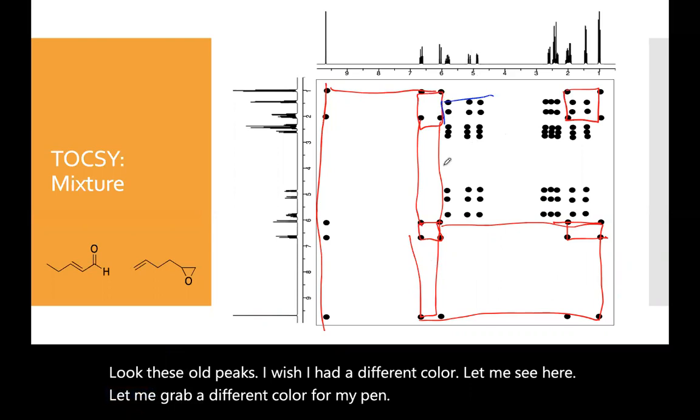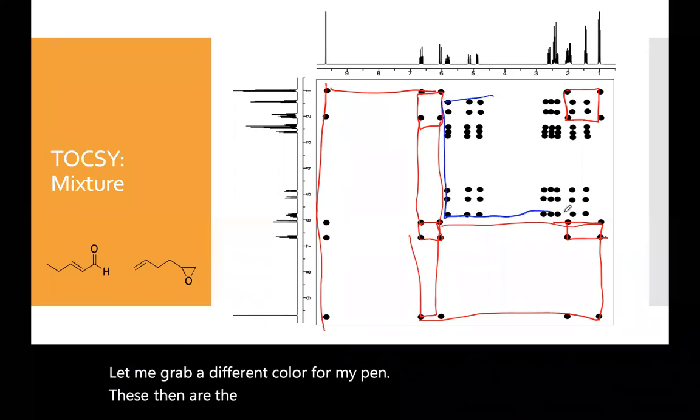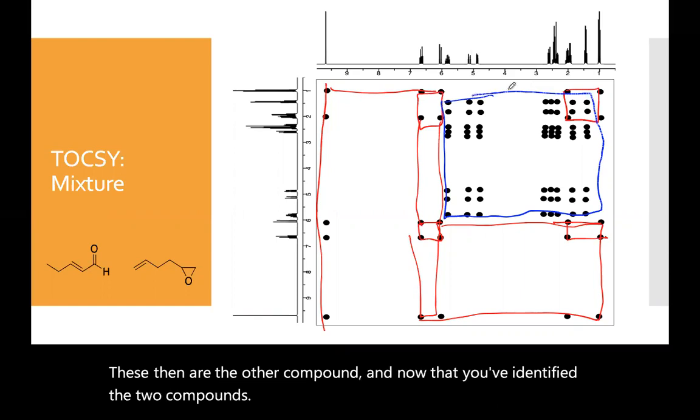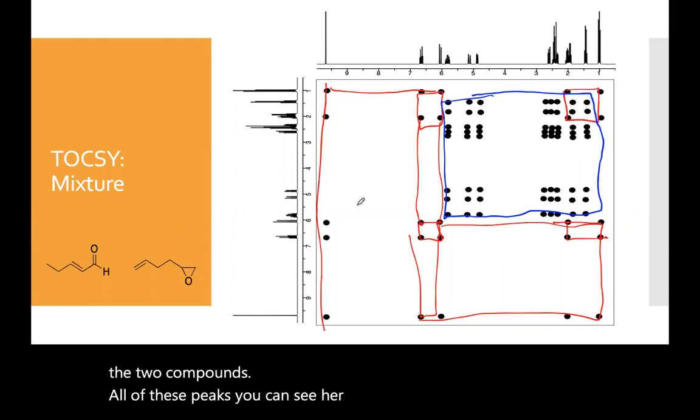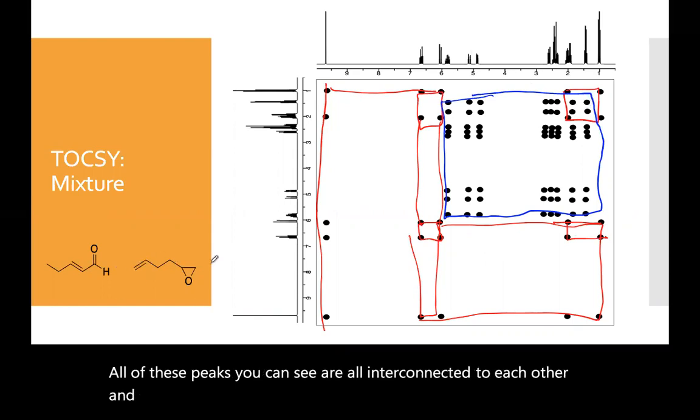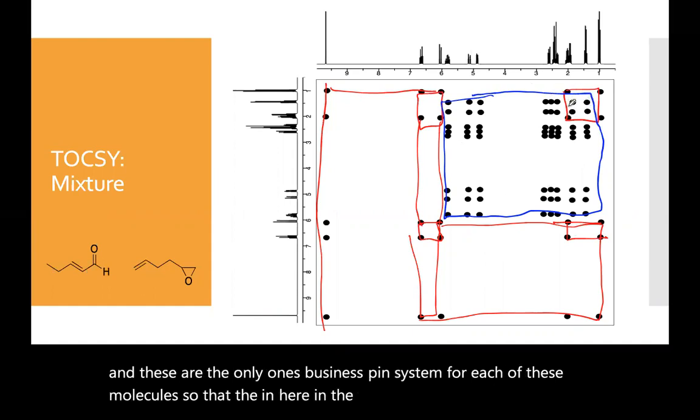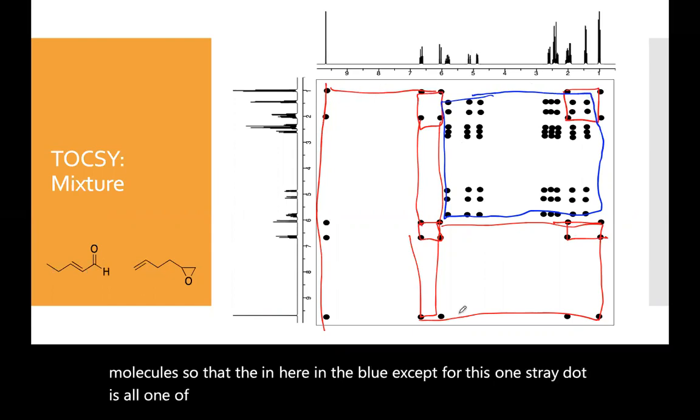These then are the other compound. And now that you've identified the two compounds, all of these peaks you can see are all interconnected to each other. And these are, there's only one spin system for each of these molecules. So you know that in here in the blue, except for this one stray dot is all one of the compounds. And this one is the other one. And this one has the aldehyde.